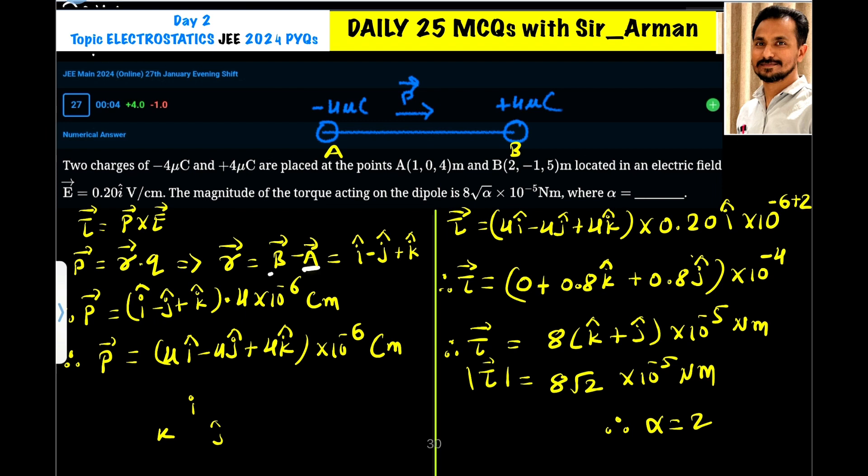So I have subtracted A from B, means B minus A, so it is 2 minus 1, so it is 1, that is I cap. Here it is X coordinate, Y coordinate, Z coordinate, again X coordinate, Y coordinate and Z coordinate. So here we will do X2 minus X1, Y2 minus Y1, and Z2 minus Z1. So 2 minus 1 is only 1, so it is I cap, minus 1 minus 0, so it is minus 1 J cap.